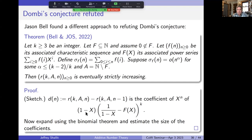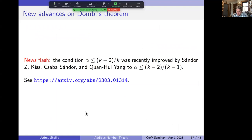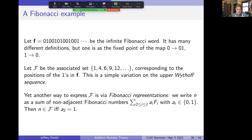After we proved this, other mathematicians improved the condition. Very recently, Sándor Kiss, Csaba Sándor, and Quan-Hui Yang improved the bound from α ≤ (k−2)/k to α ≤ (k−2)/(k−1), and that bound is optimal. I believe Professor Kiss is in the audience.